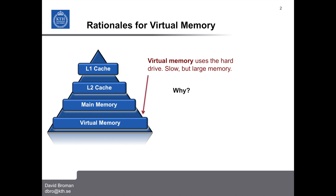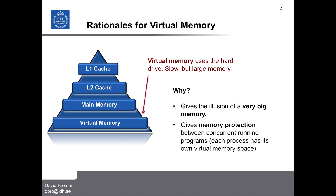So why do we care about virtual memory? Well, basically there are two main reasons. First, it can give the illusion of being a very big memory, so that each program believes it has access to the whole memory — like a huge memory — even though it has a very small physical memory. Another thing is that it gives memory protection, so that when different programs are running in the operating system, each of them believes they have a huge memory, but they are sharing the same physical memory and they cannot access each other's memory. So there is memory protection between them.